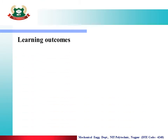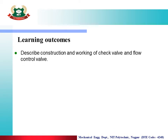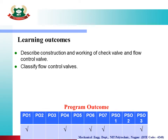Learning Outcomes: After completion of this lecture, you will be able to describe the Construction and Working of Check Valve and Flow Control Valve, and Classify Flow Control Valves. Program Outcomes met by this lecture: PO1 to PO7 and PO1 to PO3.